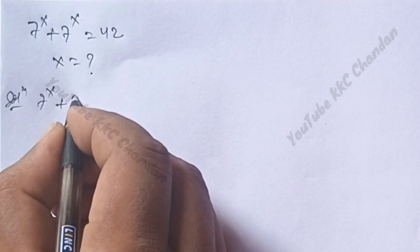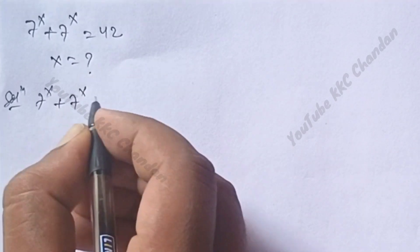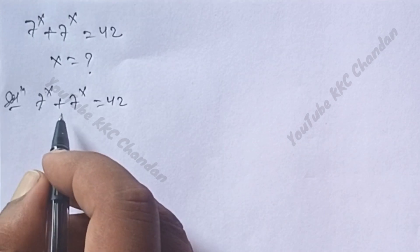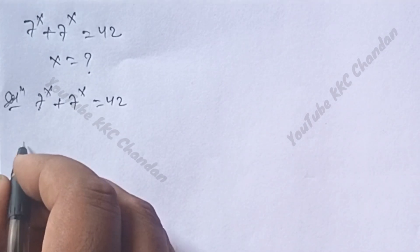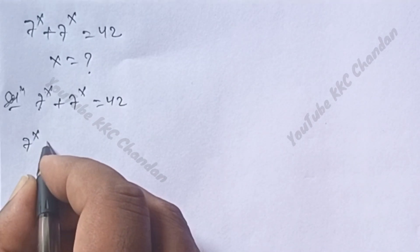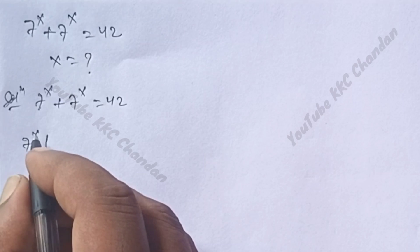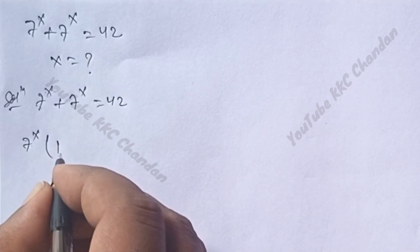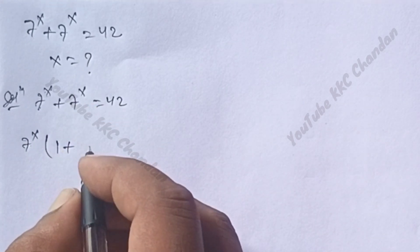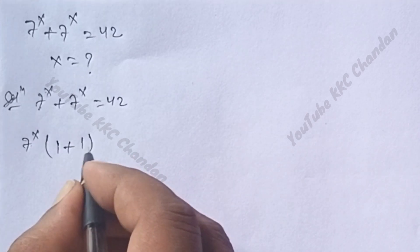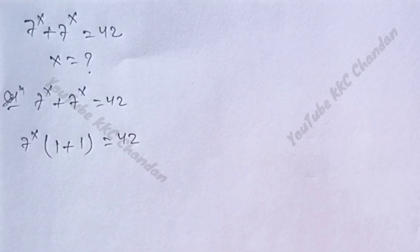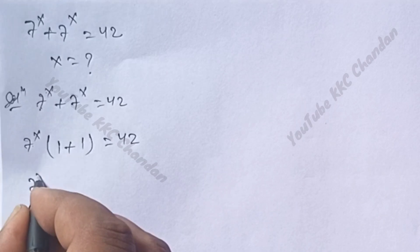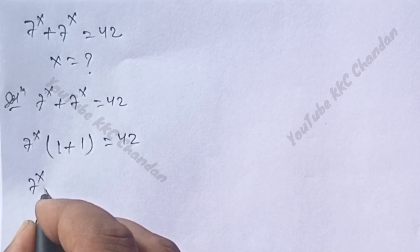According to the question, 7 power x plus 7 power x equals 42. We have two times 7 power x, so take 7 power x common. Each term divided by 7 power x leaves 1, so we get 7 power x into (1 + 1) equals 42.